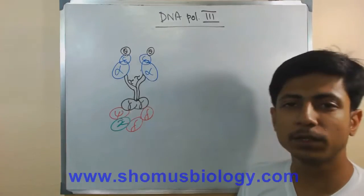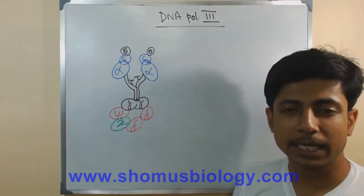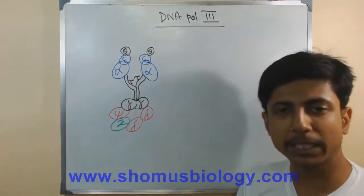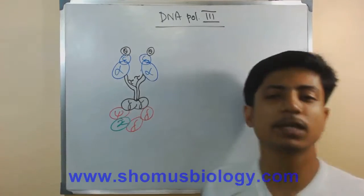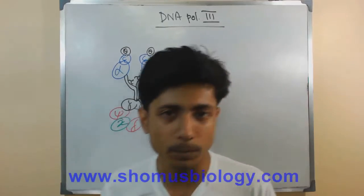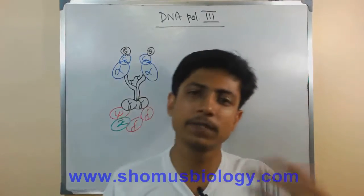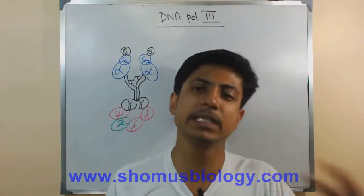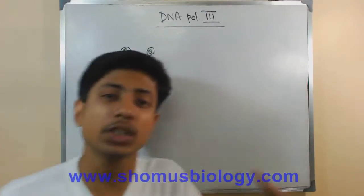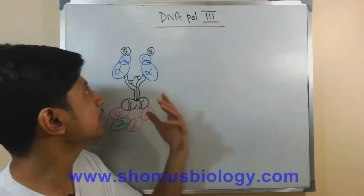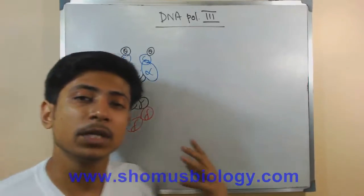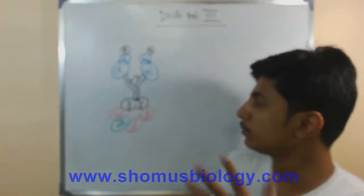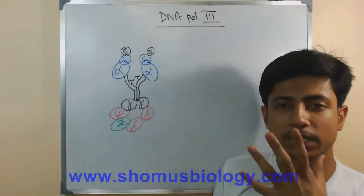DNA Polymerase 3 was discovered later. At the very beginning, DNA Polymerase 1 was discovered by Arthur Kornberg. Many years later, his son discovered DNA Polymerase 3. As you can see, it has a very complicated structure.